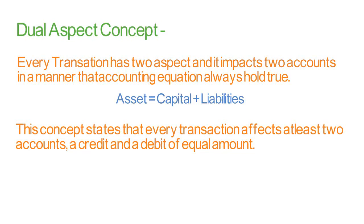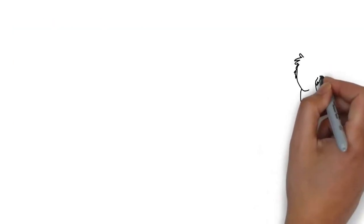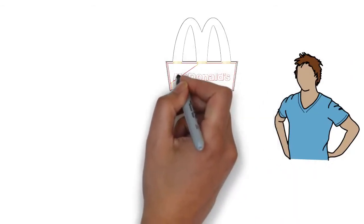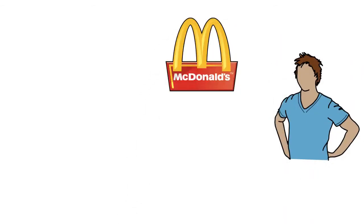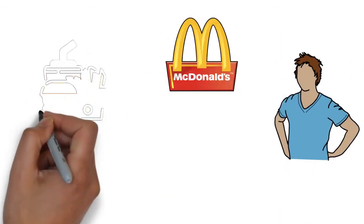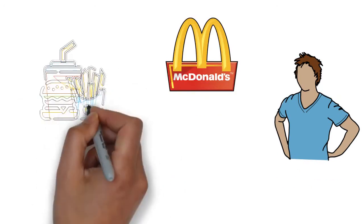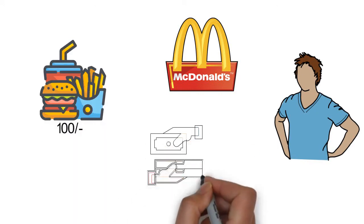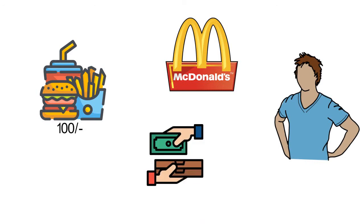A boy has a McDonald's shop — he took a franchise of McDonald's, so he must be selling burgers daily. Let's assume the price of a burger was rupees hundred. He was giving burgers and taking cash from customers.